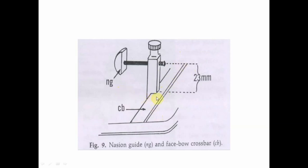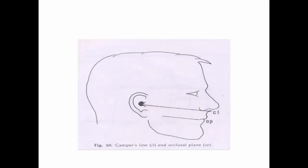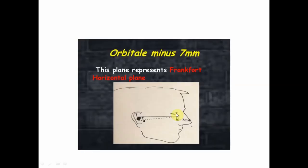The crossbar is 23 millimeters from the nasion gate downward and is almost in line with the orbitale of the patient, which serves as the anterior reference point. Another reference point is the ala of the nose: the ala of nose is marked on the patient, and the anterior reference point of the facebow is set to the ala of nose. This method uses the Camper's plane instead of the Frankfurt plane as the plane of orientation. The Camper's plane is the line from the tragus of the ear to the ala of nose.